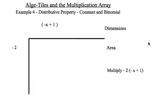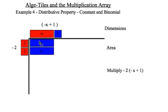My last example, negative 2 times negative x plus 1. So, I'll represent negative 2 on the left-hand side here with some red tiles. Negative x plus 1 on the top. Now, negative 1 times negative x gives me positive x. I need to do that twice.